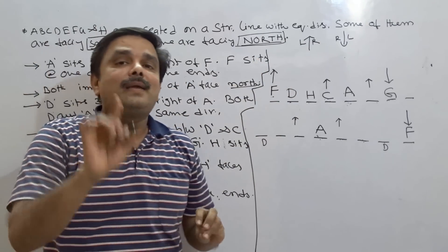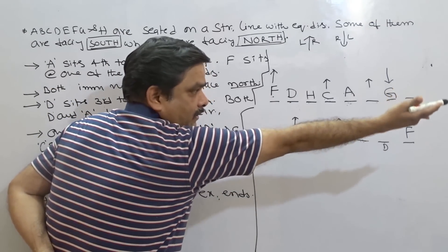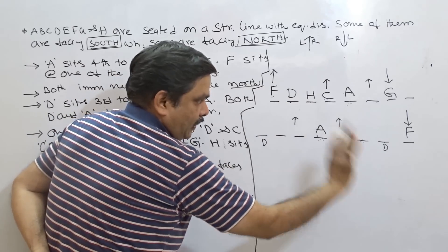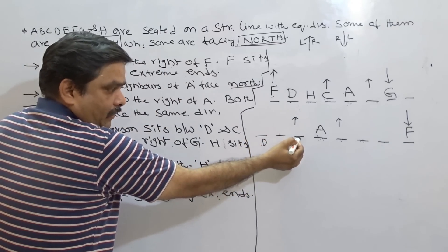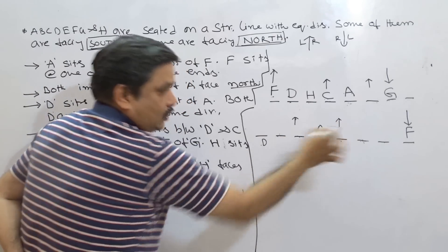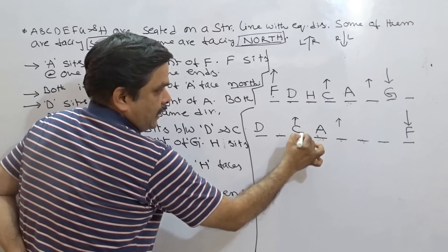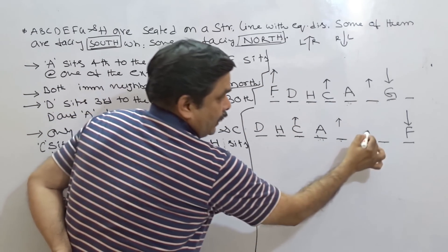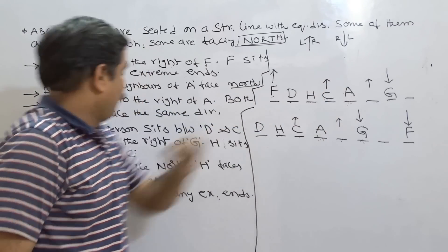Now taking the same data for the second arrangement: am I able to eliminate it? Suppose D is here, one person between D and C - it can be C, but H must be immediate left of C and there is no room. So this sub-arrangement is eliminated. For the other sub-case: D, one person, then C, and H as immediate left of C - there is room. Now C sits third to the right of G: counting 1, 2, 3 - G goes here. In this case G should be facing south. So I have not eliminated either main arrangement yet.